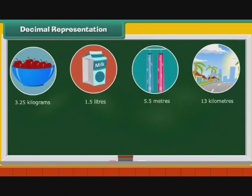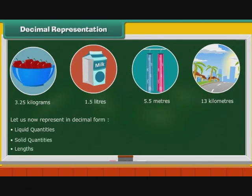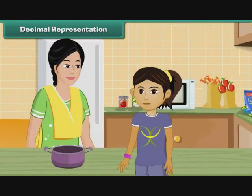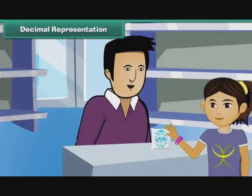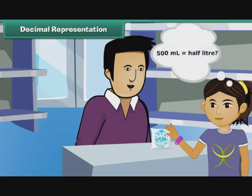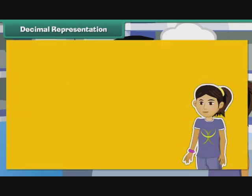Decimal Representation. In real life, we use decimals extensively to express quantities and lengths. Let us now represent in decimal form: liquid quantities, solid quantities, and lengths. Savita's mother asked her to get a half litre milk pouch from Mother Dairy. When she went to buy it, the person at the booth handed her a 500 ml pouch. Savita was confused. Is 500 ml the same as half litre? To answer this question, we must first understand the units used to measure liquids.